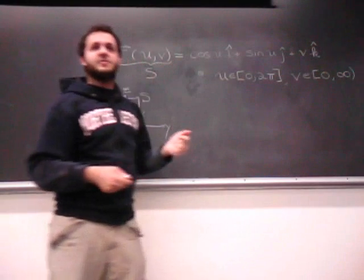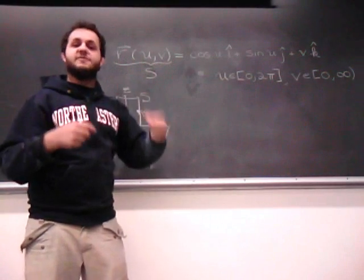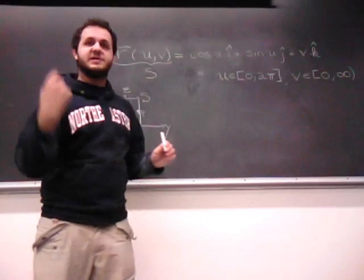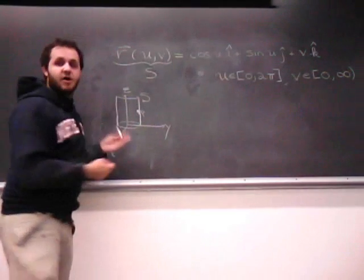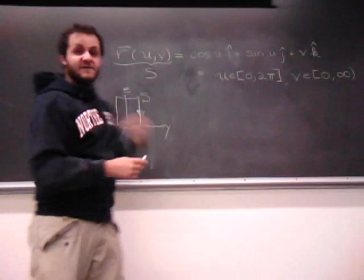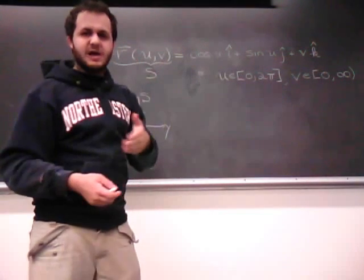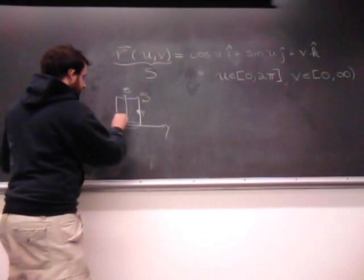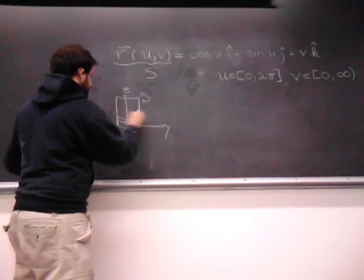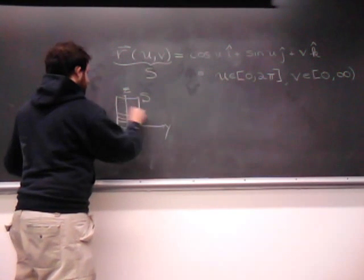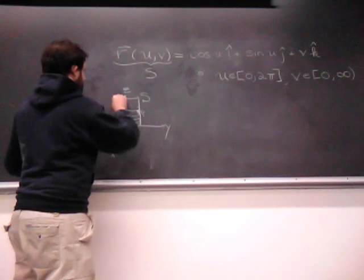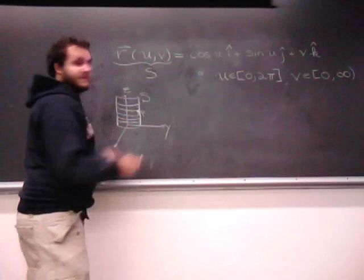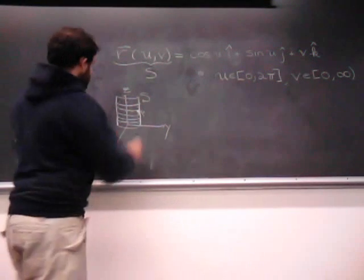But, remember that the independent variables are u and v before they're x, y, and z here. So, what we're going to do is we're going to end up with level curves in directions that are not necessarily the x and y axis, if we vary u and v. So, when we vary u, we already said that they're circles. When we vary v, we're going to get lines.